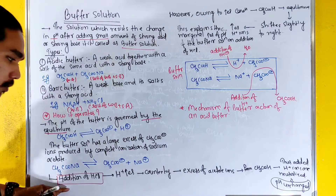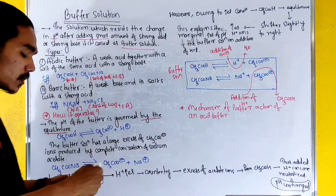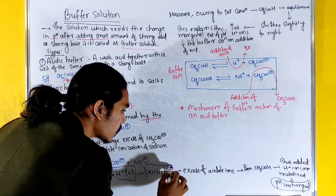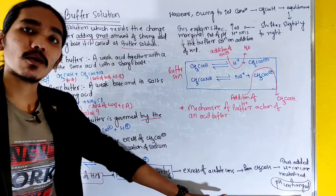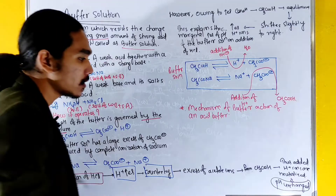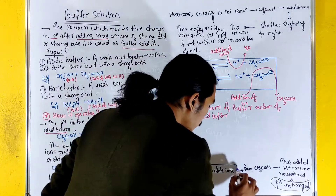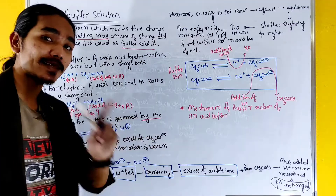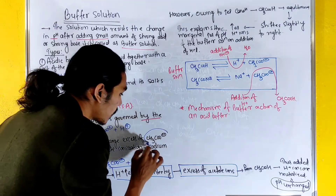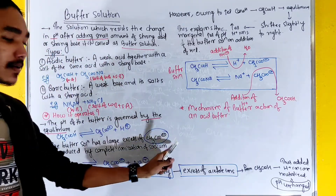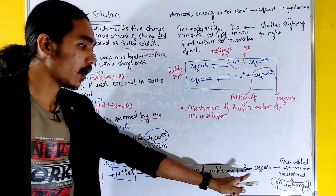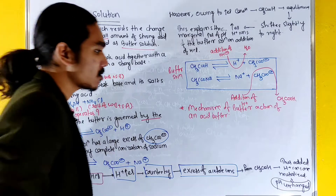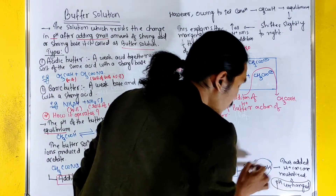When we increase the concentration of H+ ions, the excess of acetate ions — CH3COO- — will react with those H+ ions. This neutralizes the added acid.